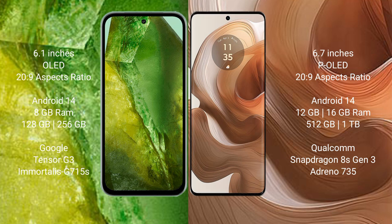Both the Google Pixel 8a and the Motorola Edge 50 Ultra run on the Android 14 operating system. The Pixel 8a comes with 8GB RAM, 128GB or 256GB internal storage, a Google Tensor G3 processor, and GPU Adreno G510. The Motorola Edge 50 Ultra comes with 12GB or 16GB RAM, 512GB internal storage, a Qualcomm Snapdragon 8 Gen 3 processor, and GPU Adreno 735.